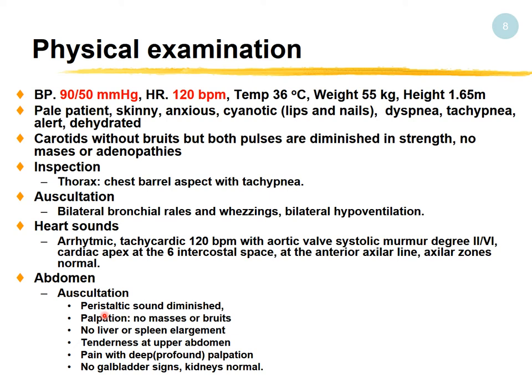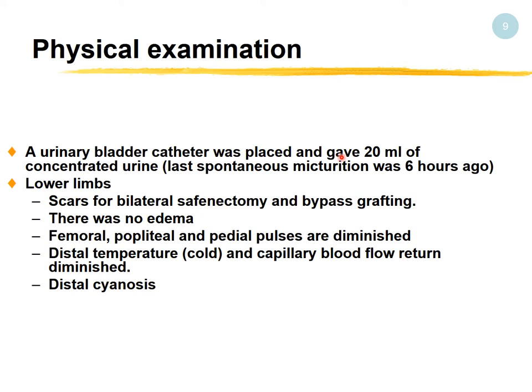Abdomen: by auscultation, peristaltic sounds diminished. Palpation: no masses or bruits, no liver or spleen enlargement, tenderness at the upper abdomen, pain with deep palpation. A urinary bladder catheter was placed, giving about 20 ml of concentrated urine — he has oliguria. Last spontaneous urination was about six hours ago.